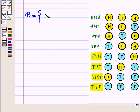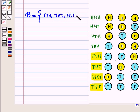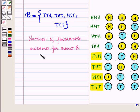Event B is a set containing elements TTH, THT, HTT, and TTT. The number of favorable outcomes for event B is equal to 4.